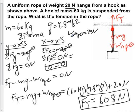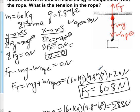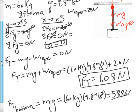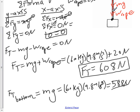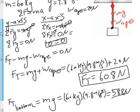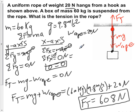The question doesn't specify where in the rope, so this shows that the force of tension varies throughout the rope. You can show the bottom, the top, or somewhere in the middle where you only count a portion — say 10 newtons — pulling it down. That's the basic way of finding the tension in the rope when given the mass of a block and the weight of the rope.